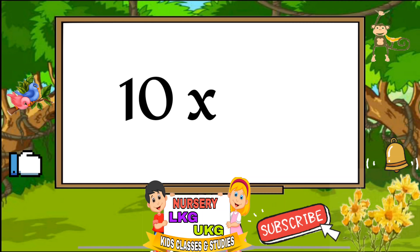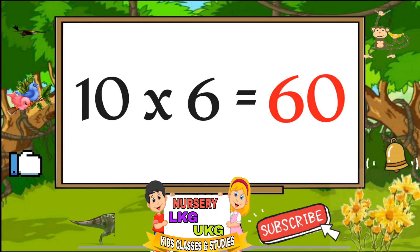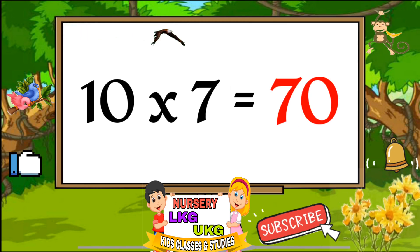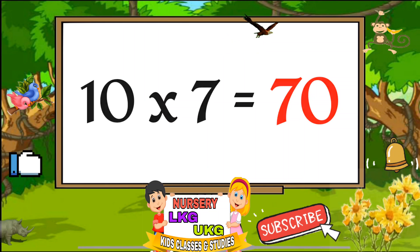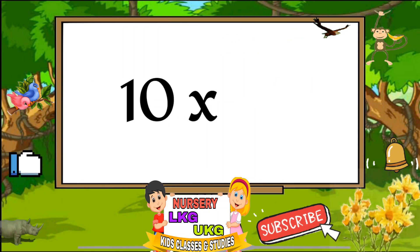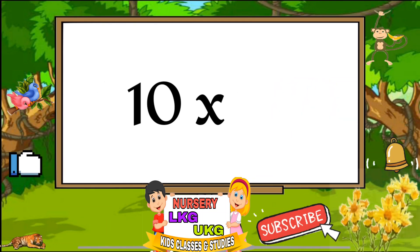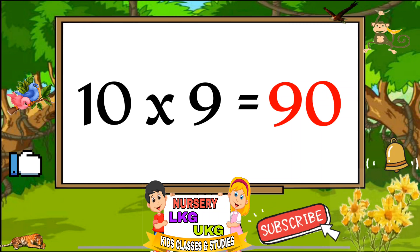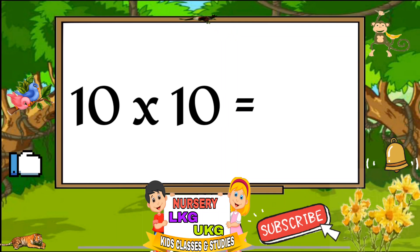Ten sixes are sixty. Ten sevens are seventy. Ten eights are eighty. Ten nines are ninety. Ten tens are hundred.